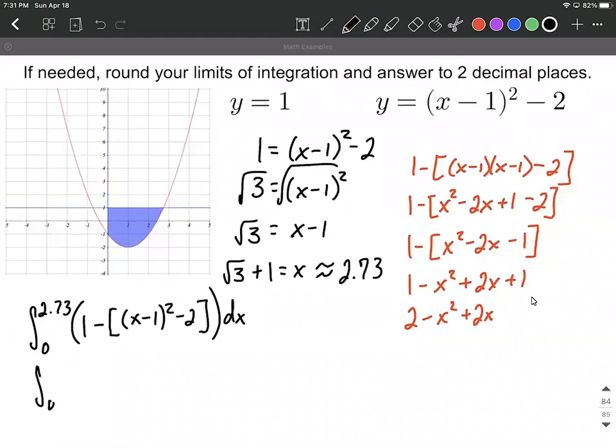So we can say that's really the integral from 0 to 2.73, and then on the inside we can put 2 - x² + 2x, and we need to integrate that.